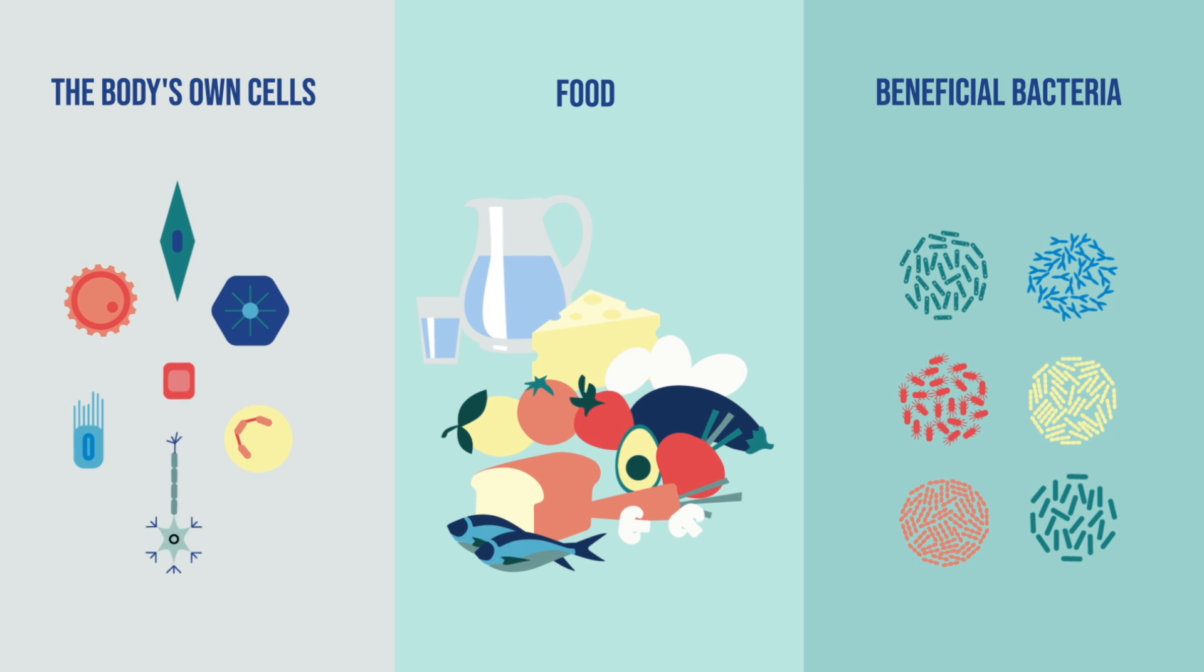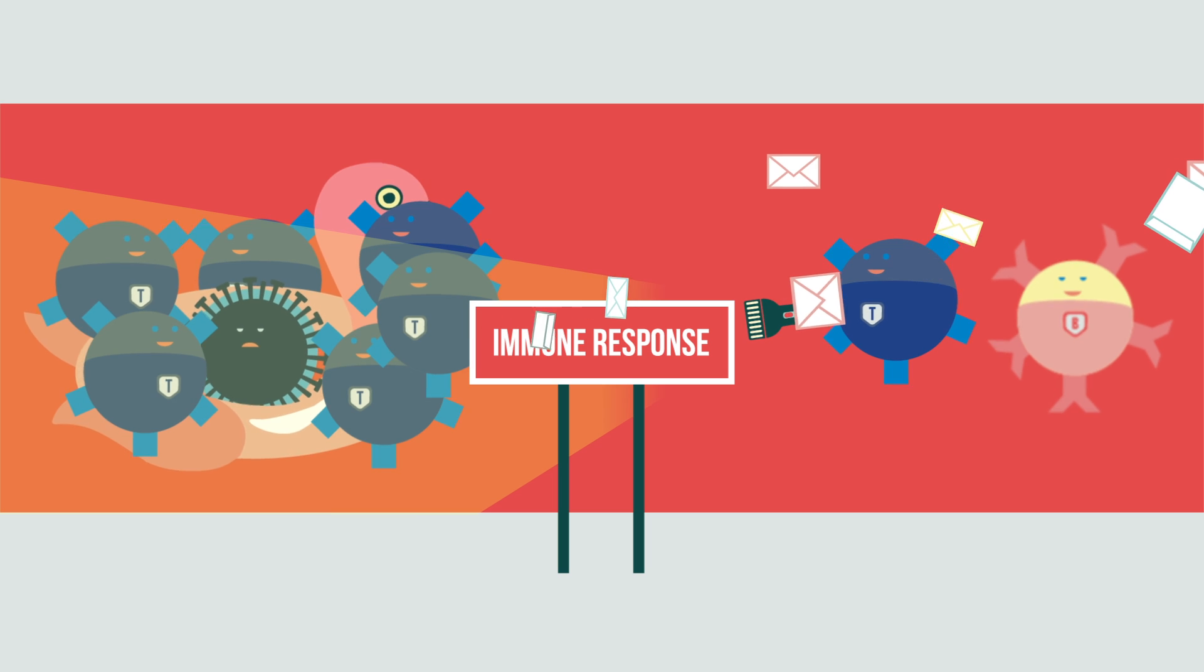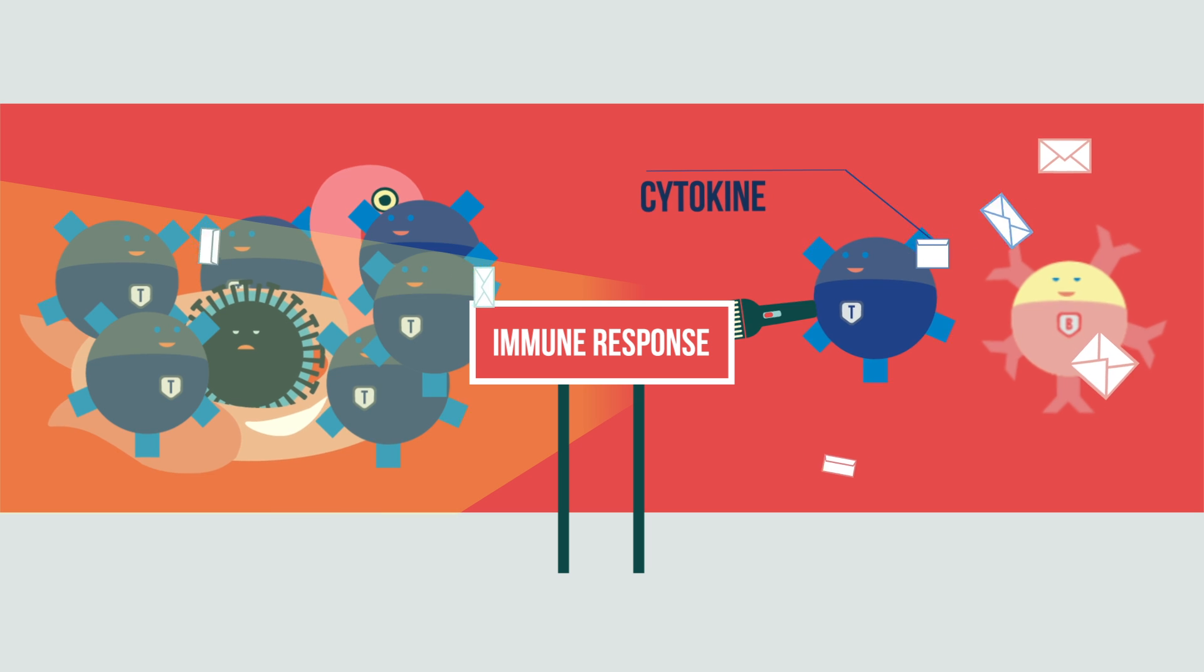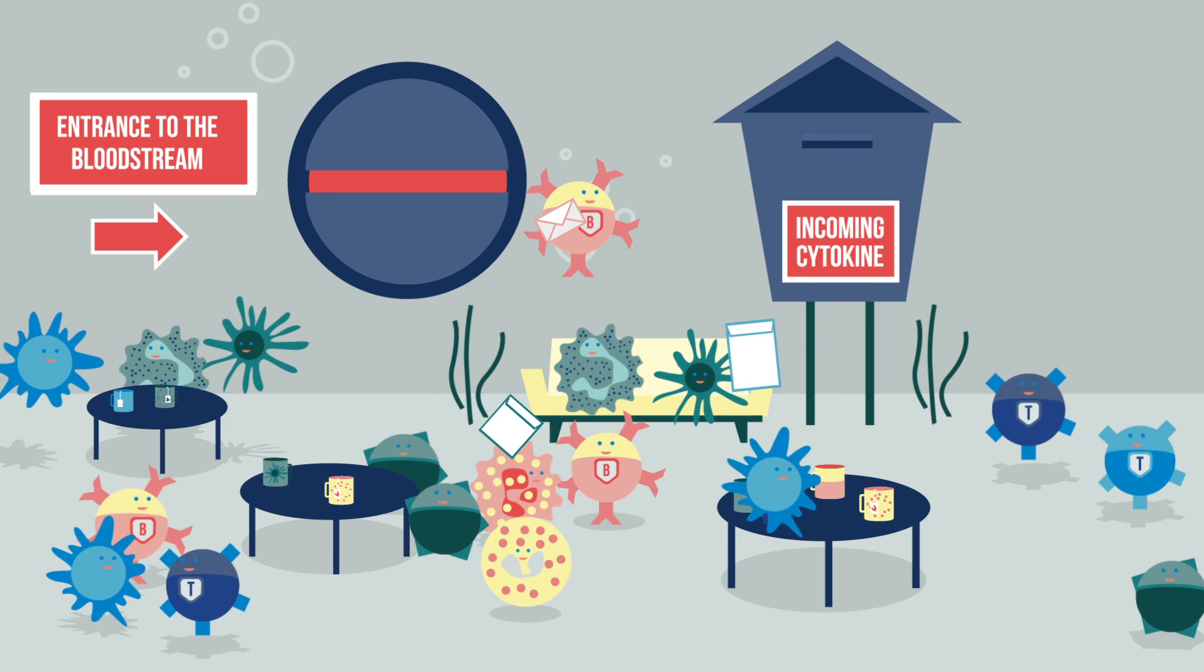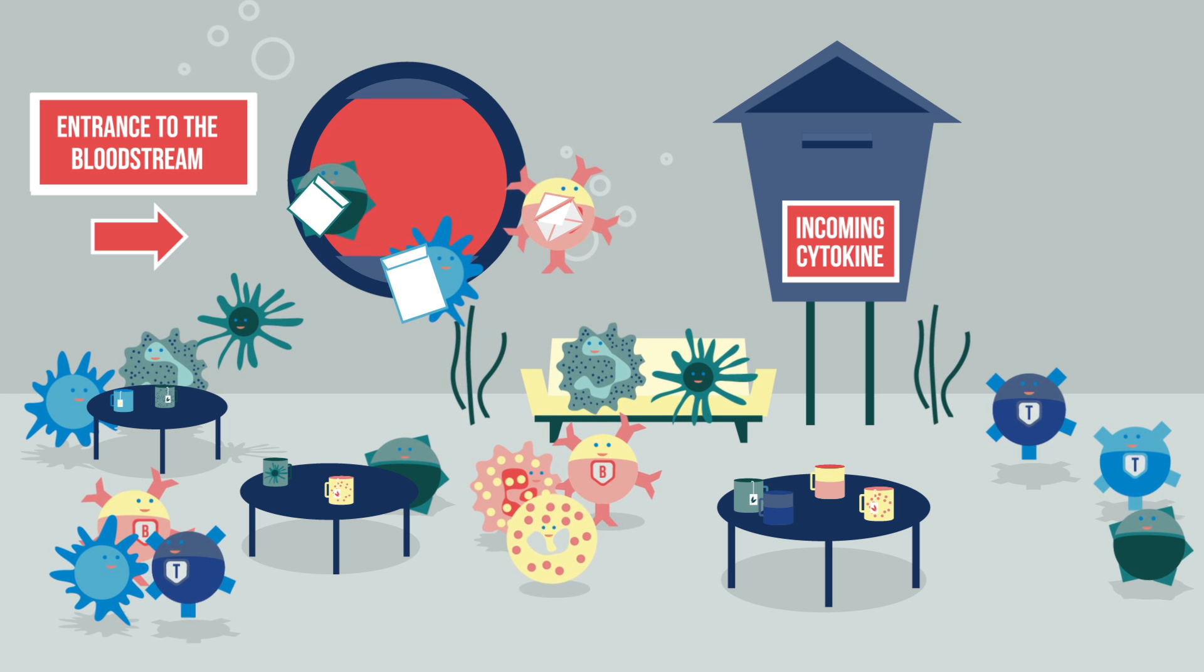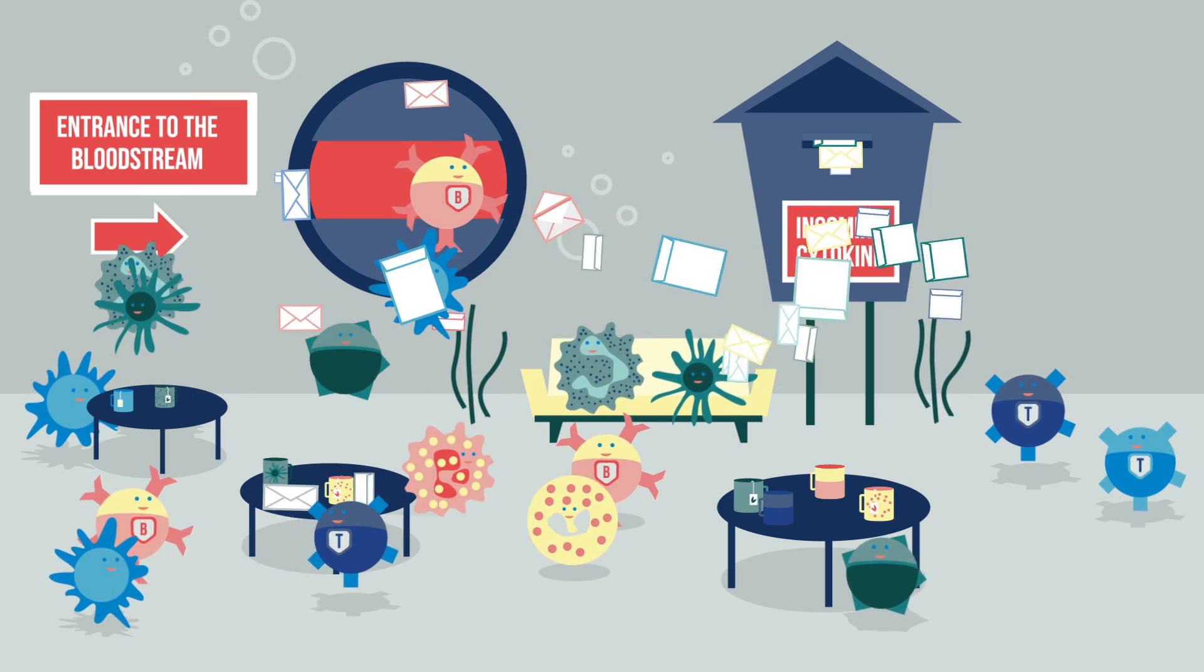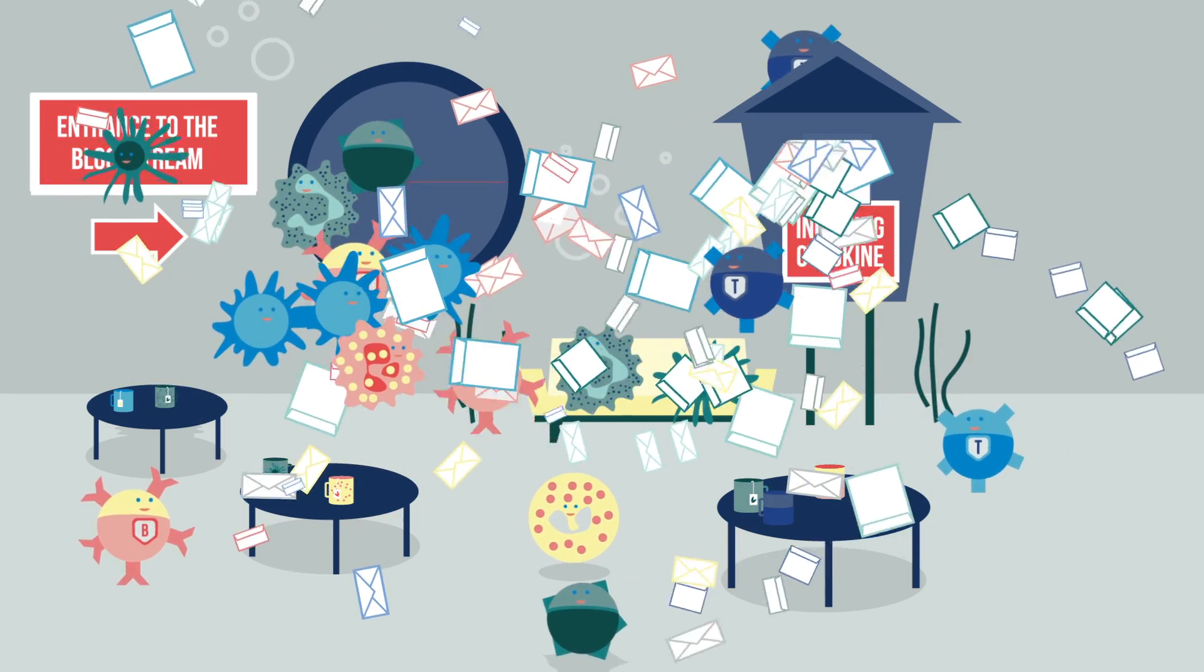But if a harmful material enters the body, the immune system attacks with the strength and quality of the attack regulated by cytokine messages. The rapid large-scale release of cytokines can in some cases lead to a cytokine storm, which is a pathological inflammation. In these cases, immune cells attack not only the pathogen but the body's own cells and organs as well.